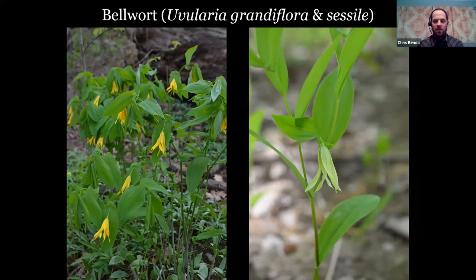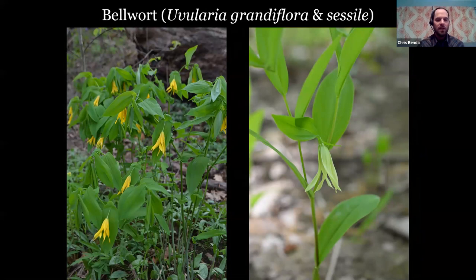Bellwort — two species in the state. Uvularia grandiflora is more common; that's the one on the left, where the stems actually pass through the leaves — that's called perfoliate, making them easy to identify. The much more uncommon is Uvularia sessilifolia, where the leaves have sessile attachment, meaning they attach directly to the stem with no stalk and don't wrap around. You can see the paler yellow flower. Heron Pond is a great place to see the sessile-leaf bellwort because it's quite uncommon.